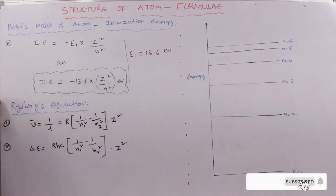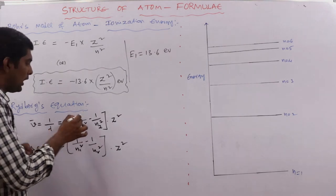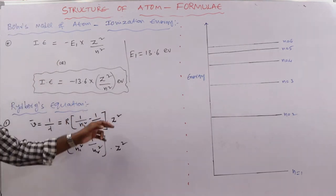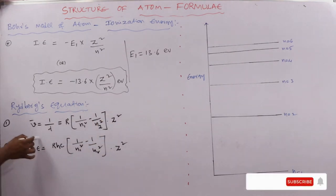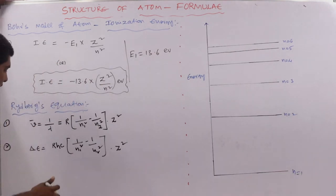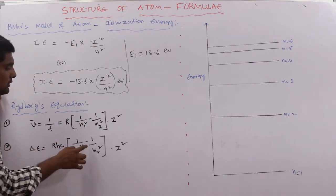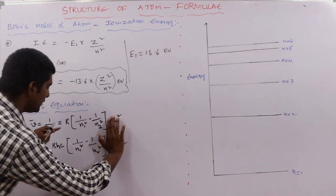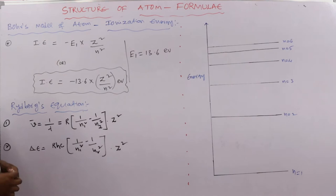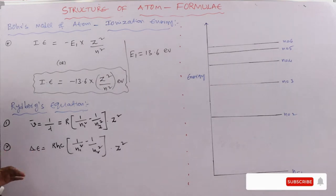Rydberg's equation for wave number: ν̄ = 1/λ = R × (1/n₁² − 1/n₂²) × Z². The energy difference between two transitions: ΔE = RHc × (1/n₁² − 1/n₂²) × Z². For hydrogen Z = 1; for hydrogen-like species, Z ≠ 1.